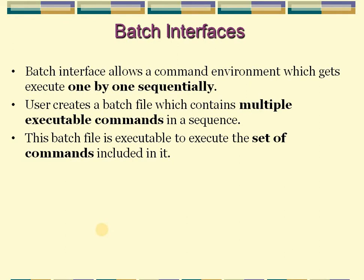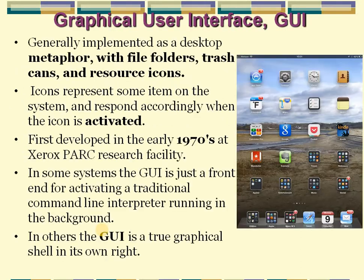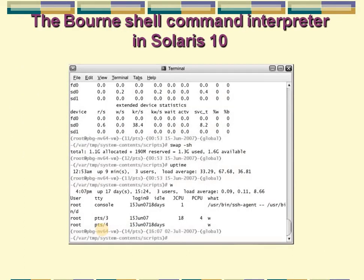User interfaces are categorized into three types: command line interface, batch interface, and graphical user interface. First, the command line interface provides an environment where the user can write their commands in text format on a command prompt. An example is the terminal in the Solaris 10 operating system — a kind of user interface where the user can write commands in text format and execute them.